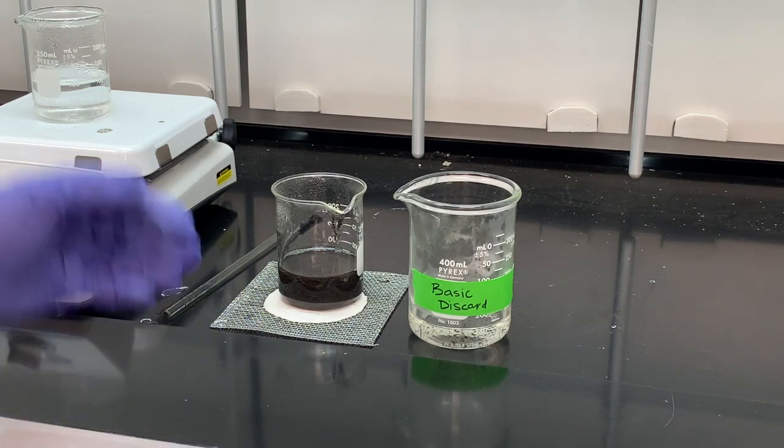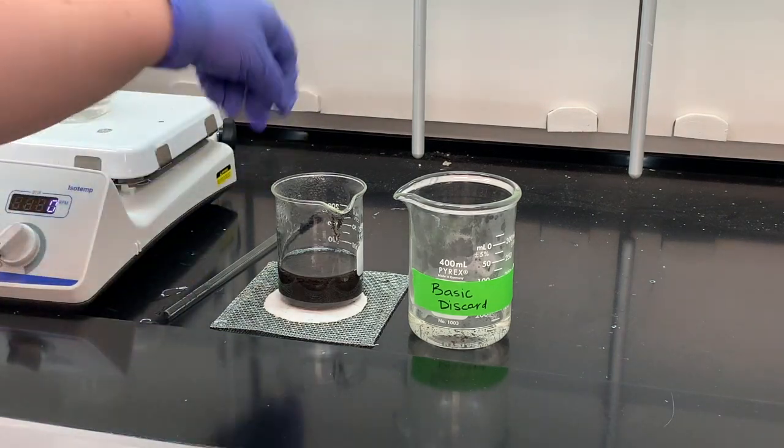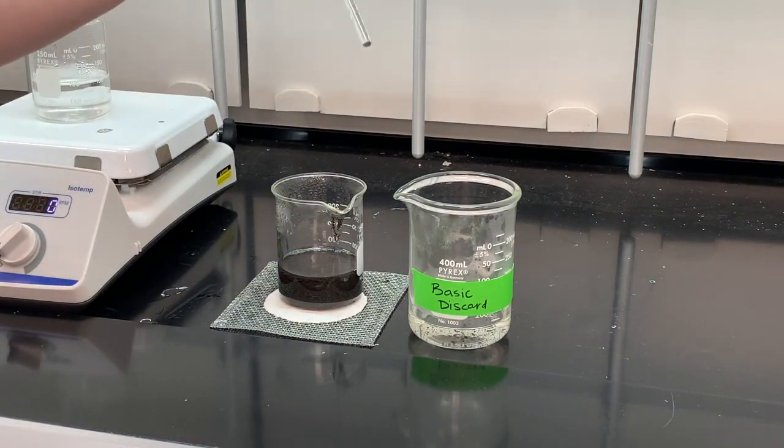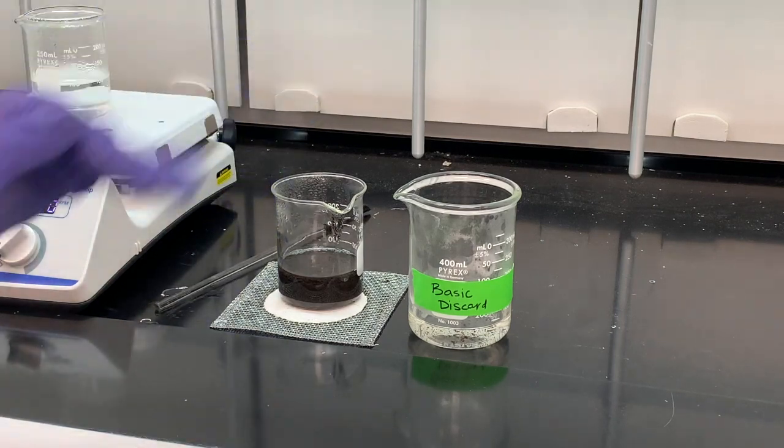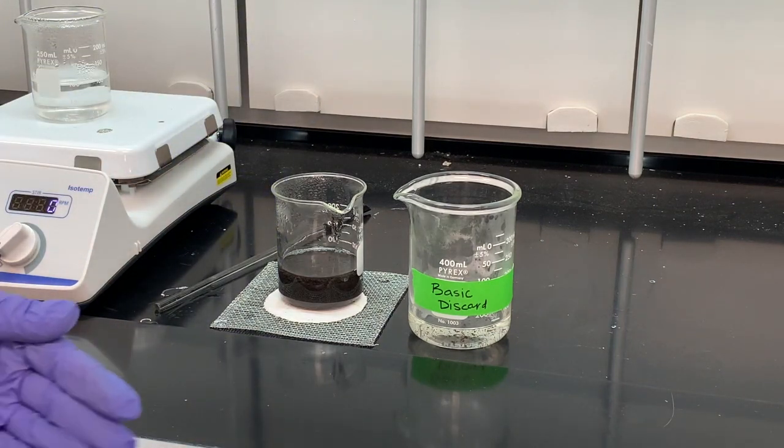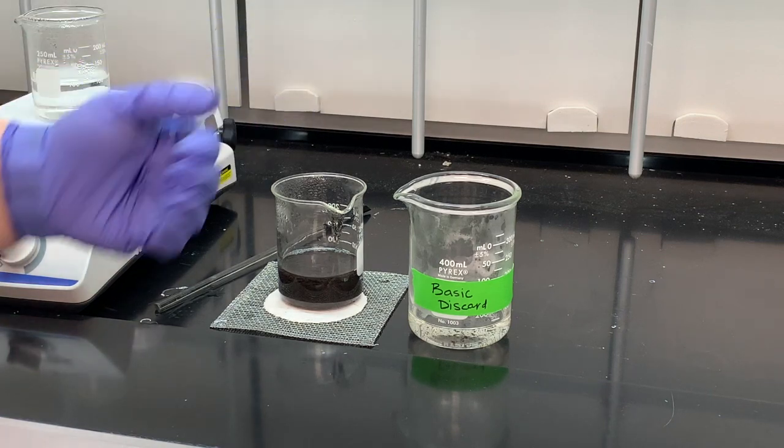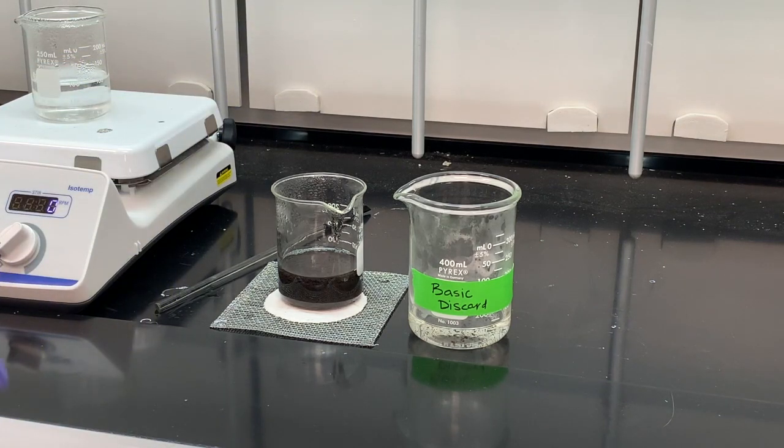So when you account for errors or if your percent yield is very low, think about the transfer steps. I set this stirring rod in there. I have some black stuff on that stirring rod. That's where some of our product went. It sticks to the sides of the beakers. We're going to move it from this beaker to another container later on. Think about those transfer steps when you're thinking about percent yield and why it might not be as good as you would like it to be.